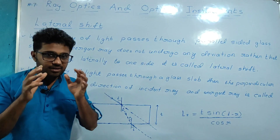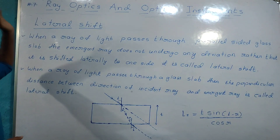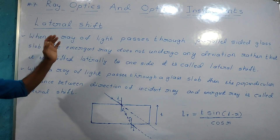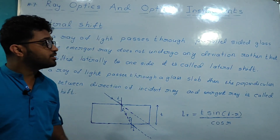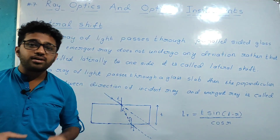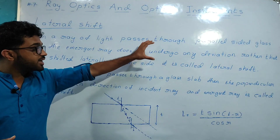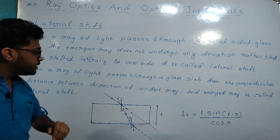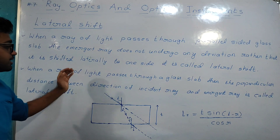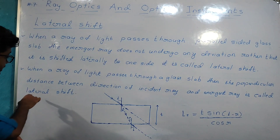Let us start now and understand the meaning of lateral shift. When a ray of light passes through a parallel-sided glass slab, the emergent ray does not undergo any deviation; rather it is shifted laterally to one side — this is called lateral shift. The perpendicular distance between the direction of the incident ray and the emergent ray is called lateral shift.